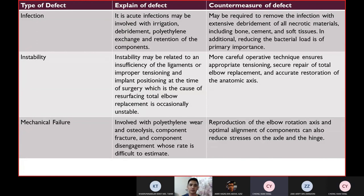For the countermeasure of the defects: for infection, it must be required to remove the infection with extensive debridement of all necrotic material, including bone, cement, and soft tissue. For instability, it must be of more careful operative technique, ensure operating tensioning secure to repair of the total elbow replacement, and accurate restoration of the anatomic axis. The last, for the mechanical failure, the countermeasure is reproduction of the elbow rotation axis, and optimal alignment of components can also reduce the stress on the axle and hinge.